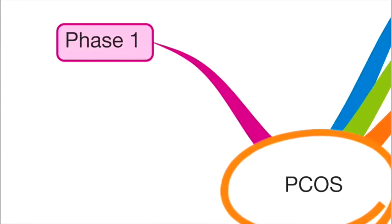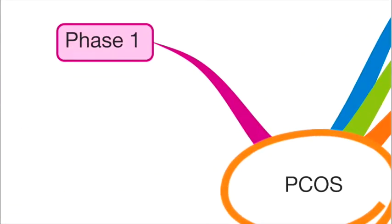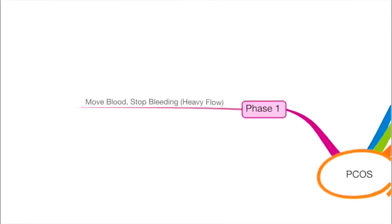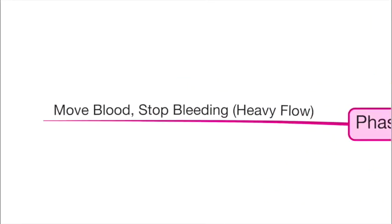Now, we need to understand there are four phases of a menses. Number one, phase one is when menses start. In this part of the plan, we need to move the blood so that the proper blood can come out of the uterus during menses. And if the flow is very heavy, then of course we need to tonify blood so that excessive flow can be stopped.